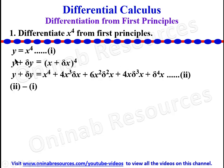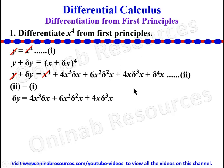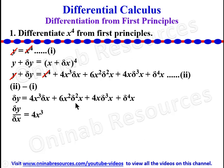With this we have expanded the right hand side, and we call this equation 2. Then equation 2 minus equation 1: y cancels y, x⁴ cancels x⁴, and we are left with delta y = 4x³·delta x + 6x²·delta²x + 4x·delta³x + delta⁴x. Now we divide through by delta x, giving us delta y / delta x = 4x³ + 6x²·delta x + 4x·delta²x + delta³x.